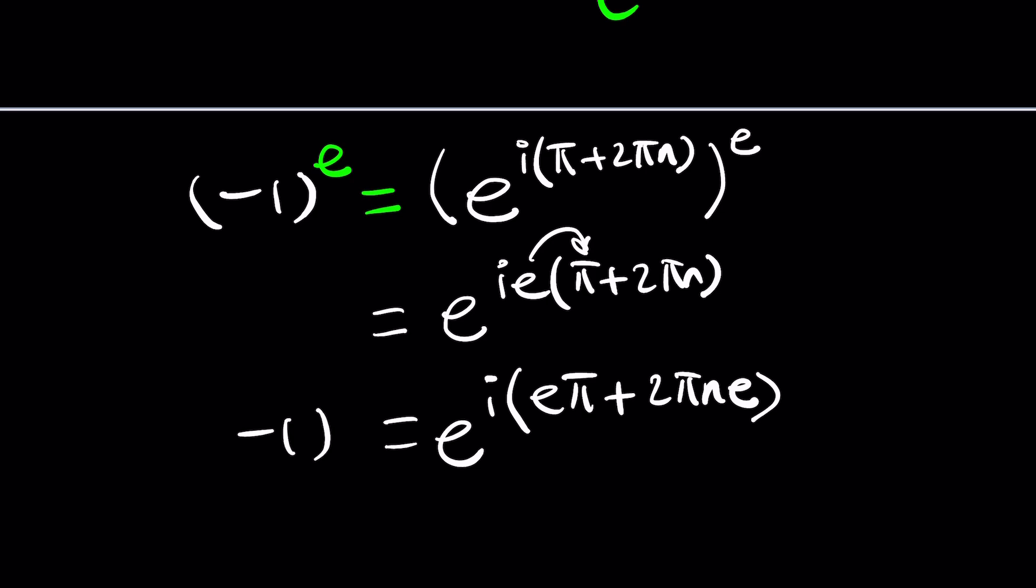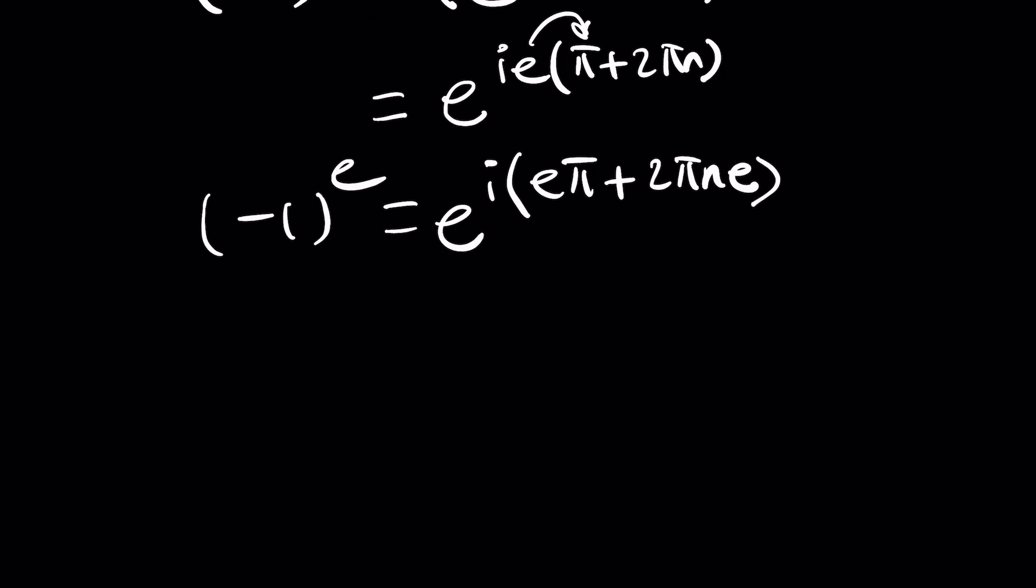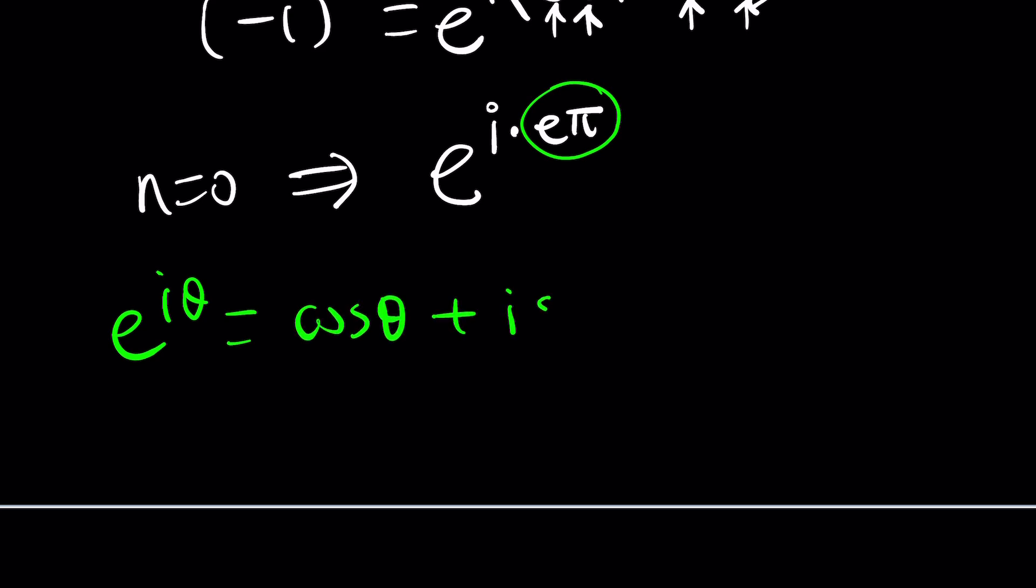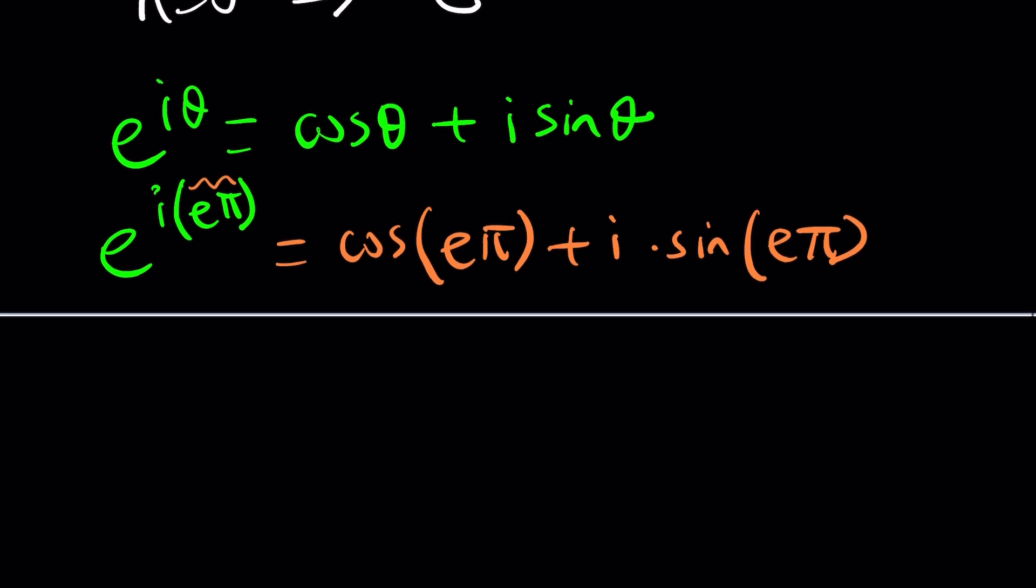By the way, e is about 2.7. So you're basically looking at 2.7 times 3.14 something. But what happens if n is equal to 0, for example? We get a simpler version of this, which is e to the power i times e pi. So this becomes our angle. And we can actually write it by using the formula e to the i theta is cosine theta plus i sine theta. So e to the power i times e pi, this is indeed our theta, cosine of e pi plus i times sine of e pi. So whatever e pi is, multiply e and pi. It's two very irrational transcendental numbers. And then find the cosine of it, find the sine of it, using a calculator. But don't worry, I did it for you.